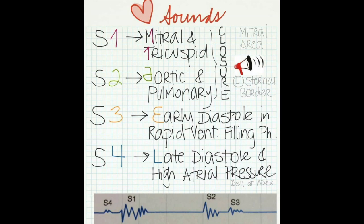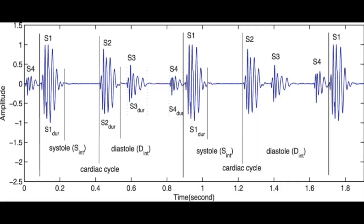S1 and S2 are high-pitched and can be heard in every healthy heart. S3 and S4 are low-pitched and not as commonly heard — they can indicate some type of problem within your heart. When we hear lub, it is the first heart sound, S1, where the mitral and tricuspid valves are closing. When we hear dub, it is the second heart sound, S2, which happens when the pulmonic and aortic valves are closing. The S1 to S2 sound is known as systole, which indicates the heart emptying blood from the chambers into the arteries. The S2 to S1 sound is known as diastole, which indicates the heart chambers filling with blood.